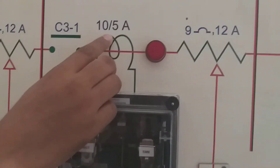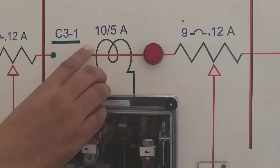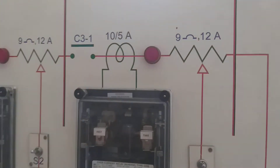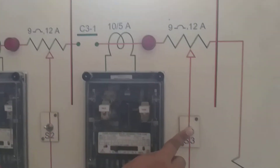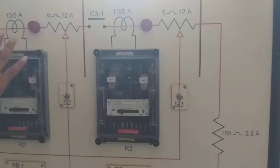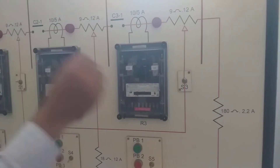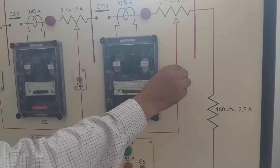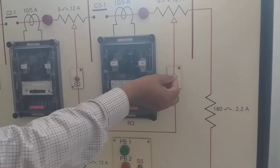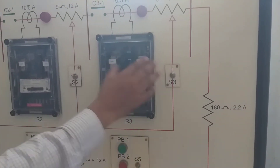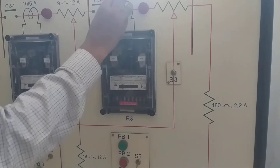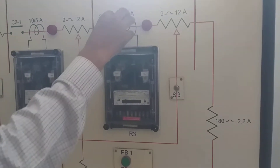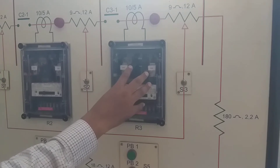The CT ratio is 10 by 5 amperes, meaning 10 amperes on the primary and 5 amperes on the secondary. These are the fault switches. Here the fault is not yet created, but when we apply the switches it means a fault is created in the circuit. The CT will then sense the fault current and give a signal to the relay.